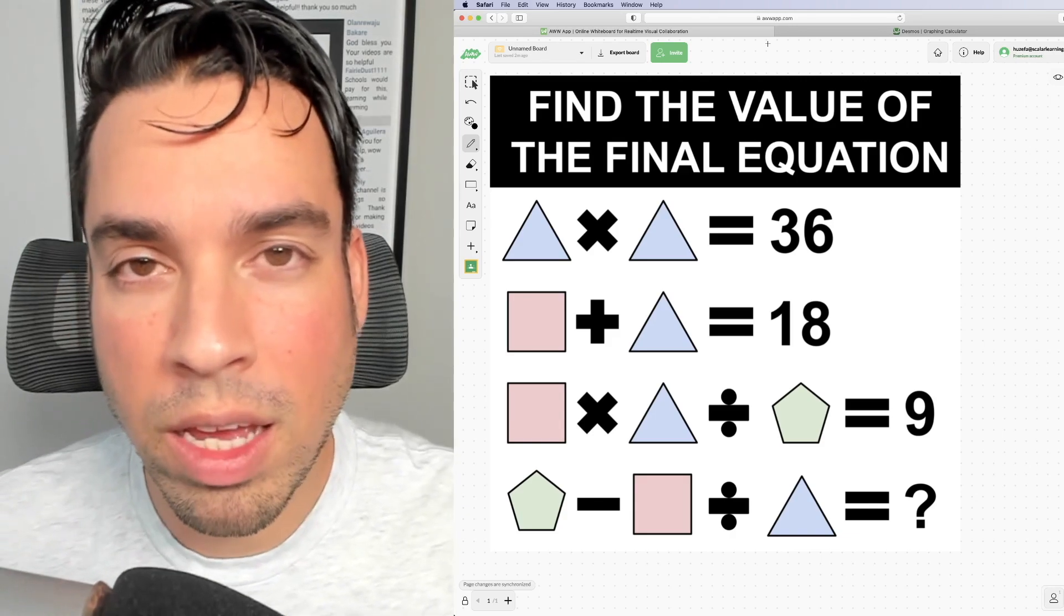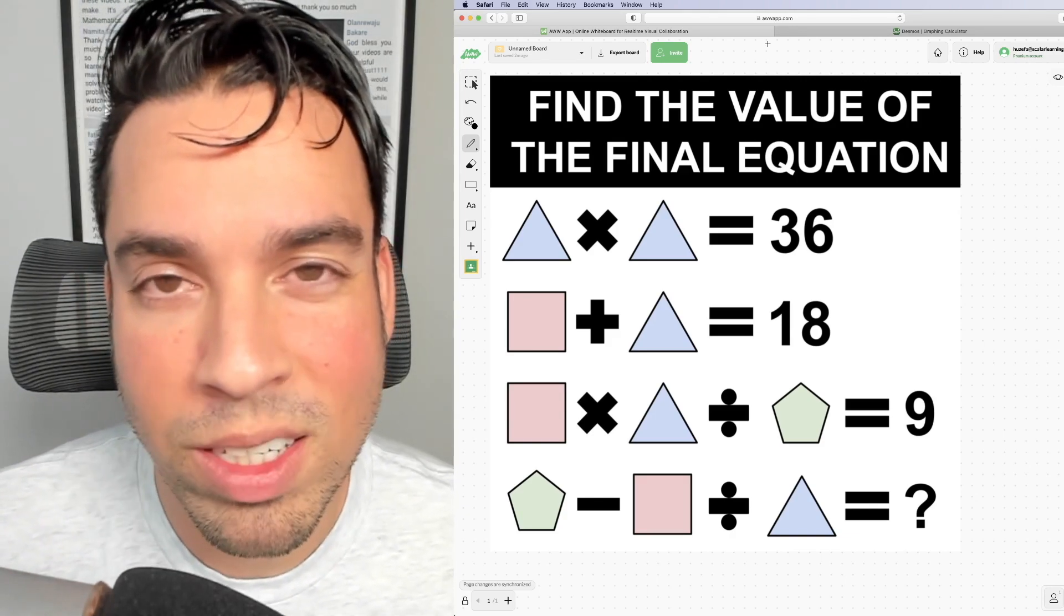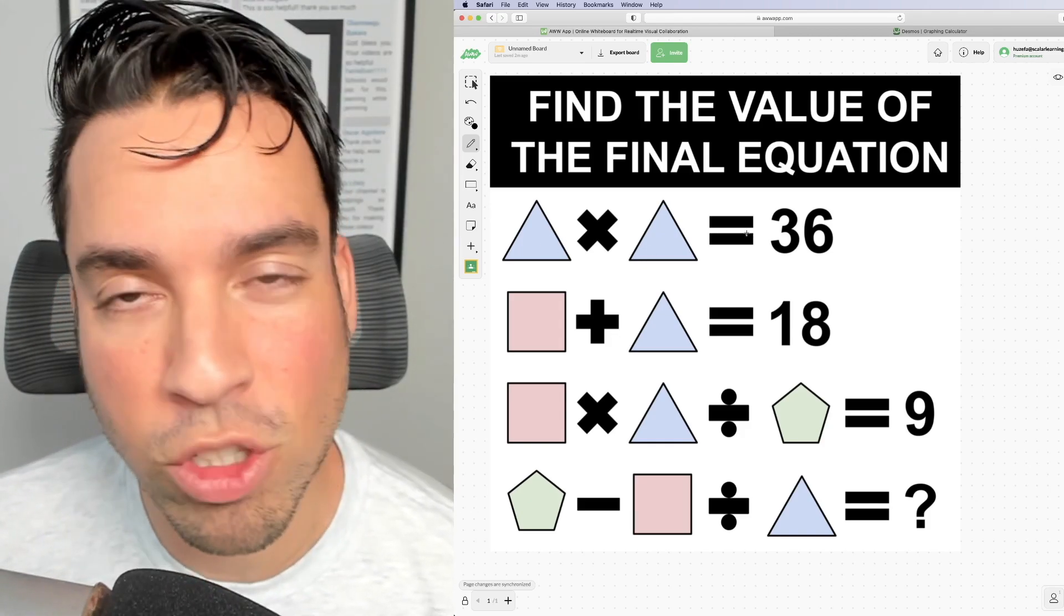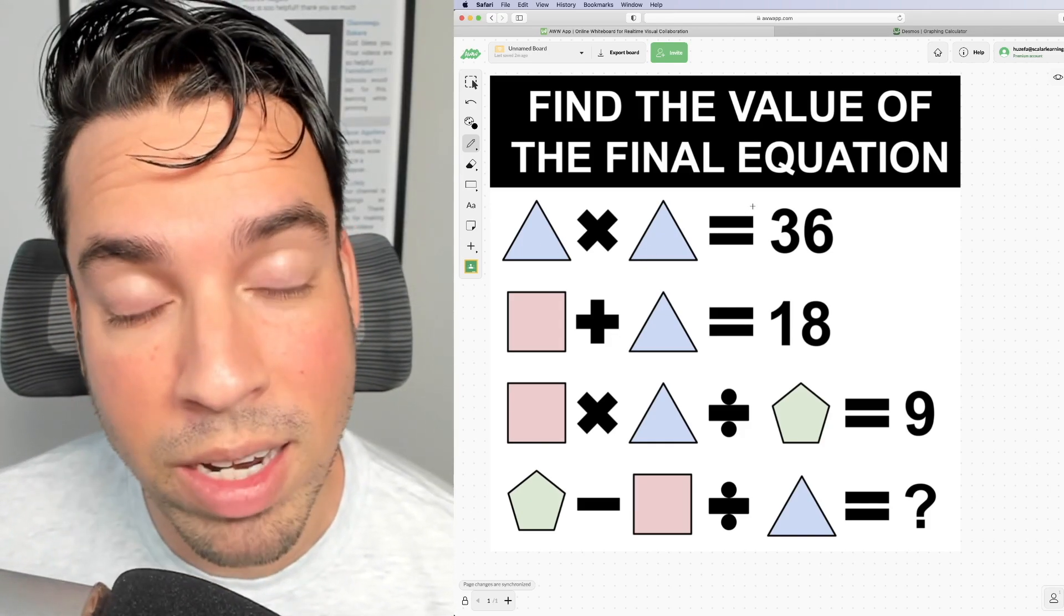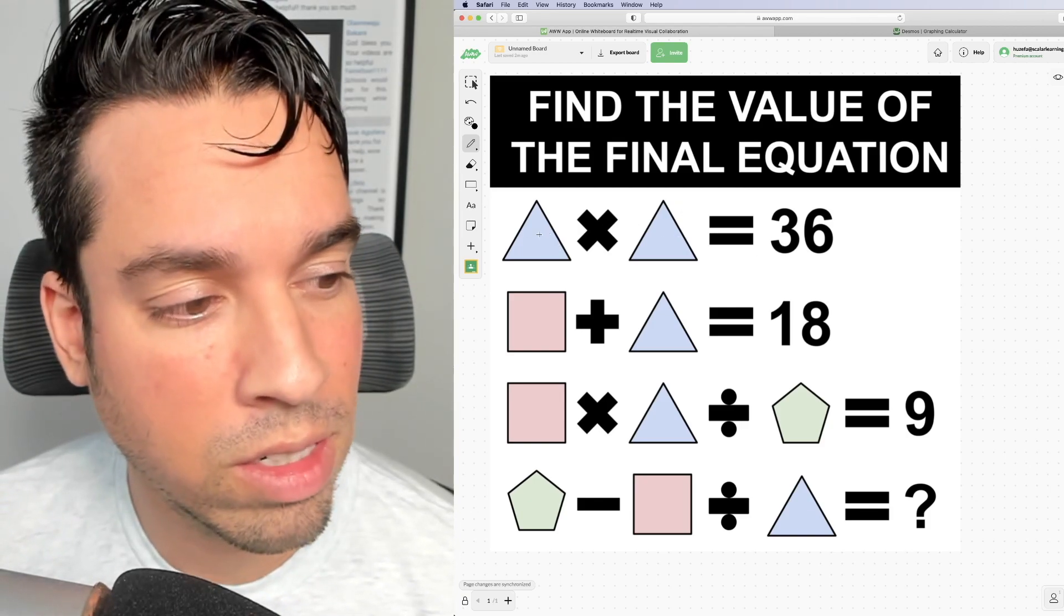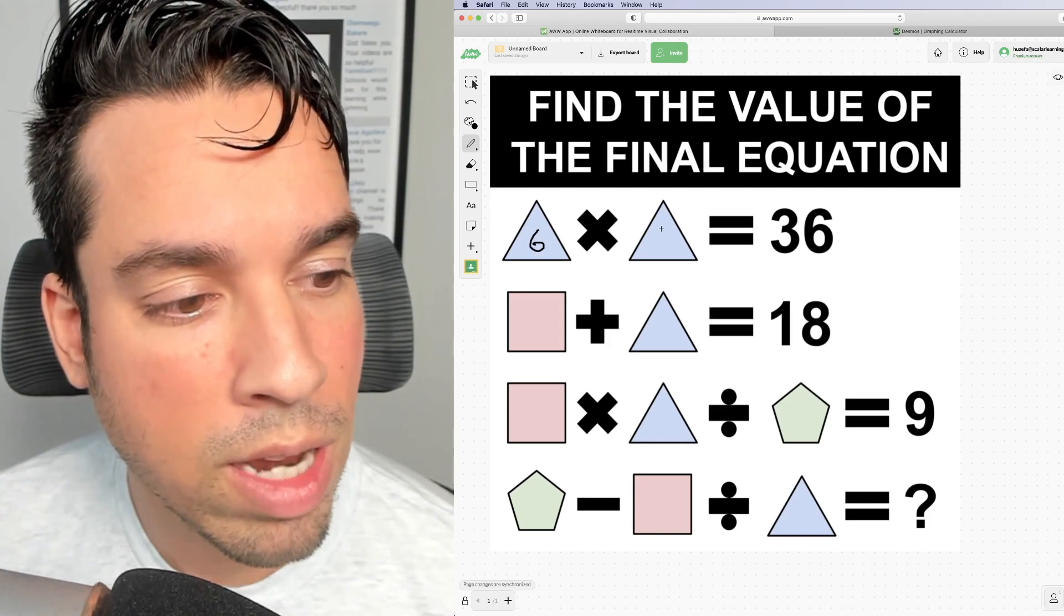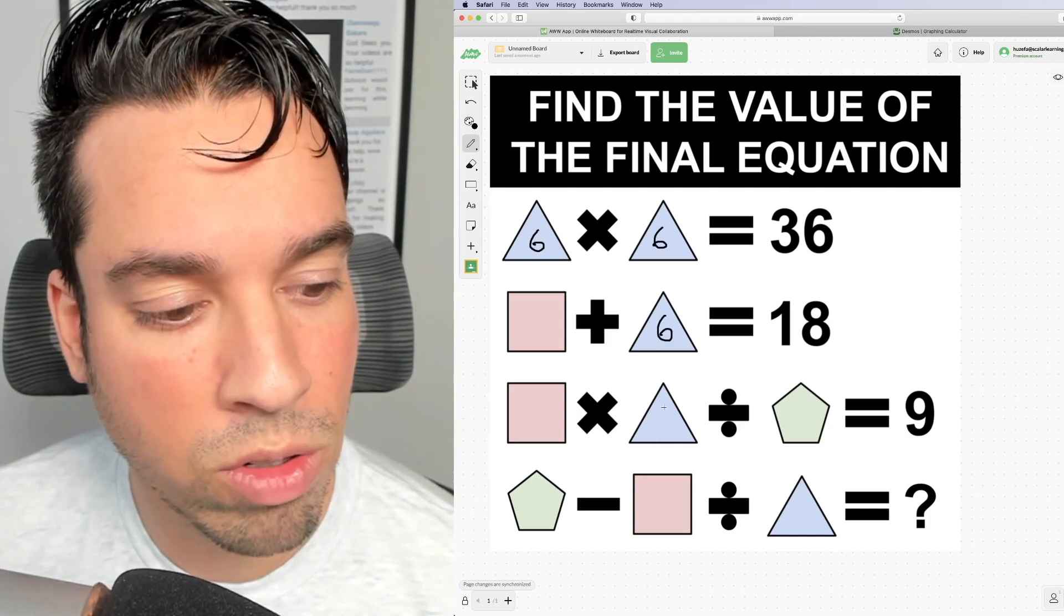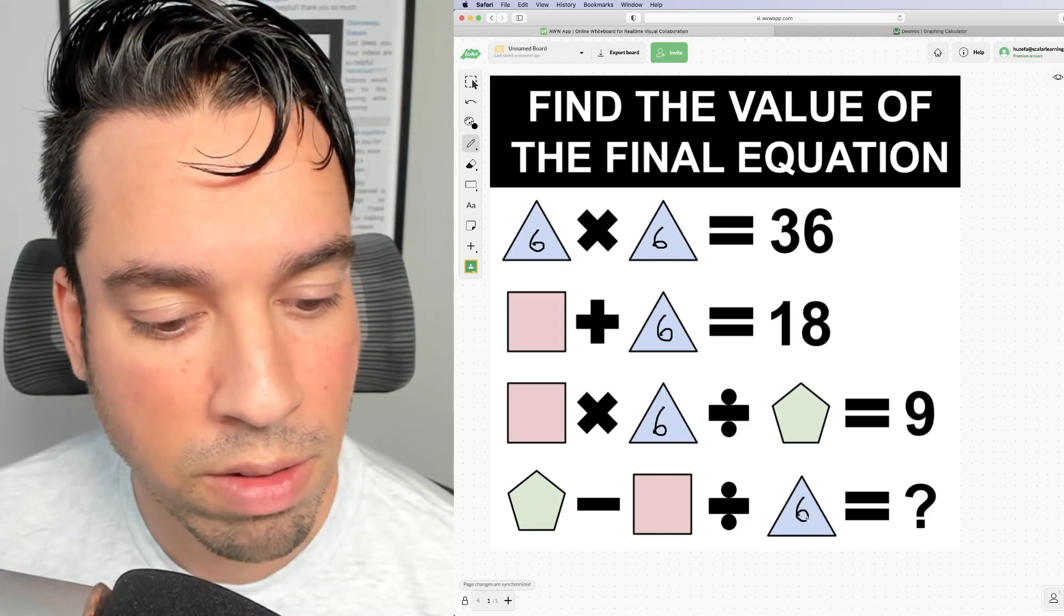First and foremost with a system of equations like this, we're going to start at the top and work our way down. So if you notice this top one, it has a triangle times a triangle equals 36, which is great because I know that the only number times itself to equal 36 is of course 6. We now know that the value of the triangle is going to be 6. So we can go ahead and fill that out.